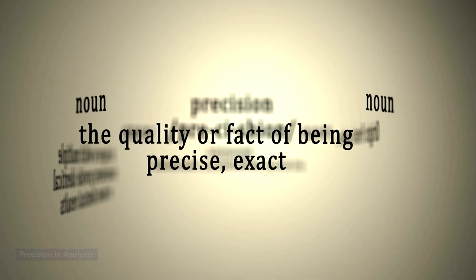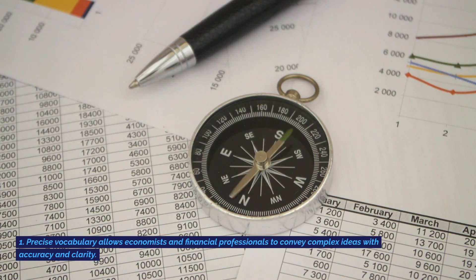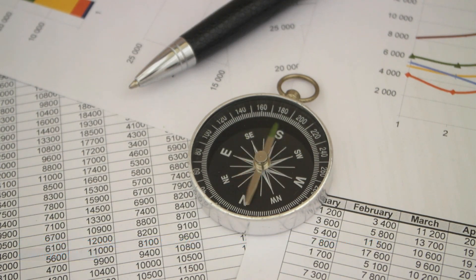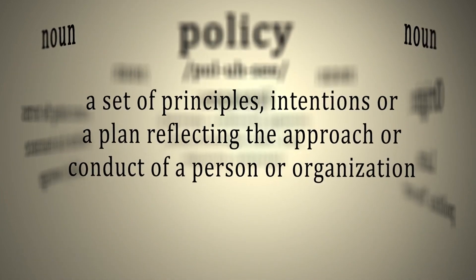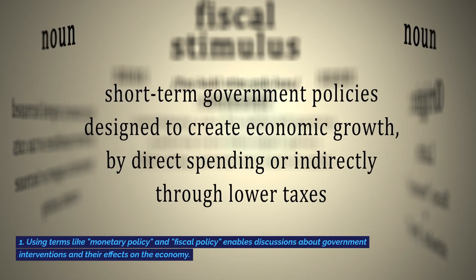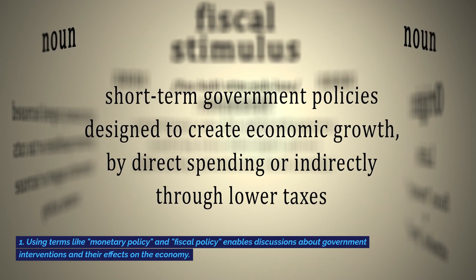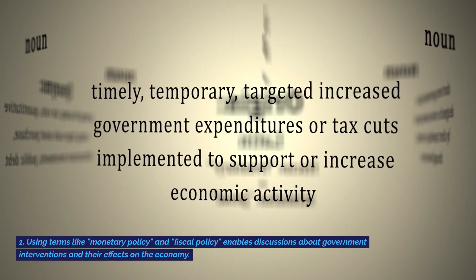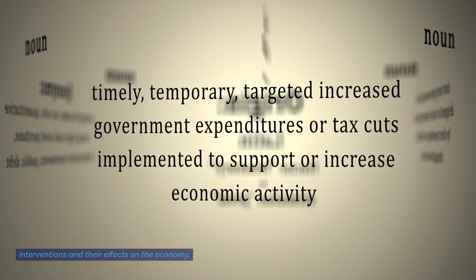Explanation and usage. Precision and analysis: precise vocabulary allows economists and financial professionals to convey complex ideas with accuracy and clarity. Policy implications: using terms like monetary policy and fiscal policy enables discussions about government interventions and their effects on the economy.